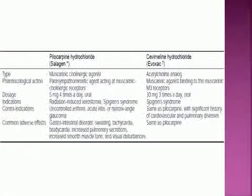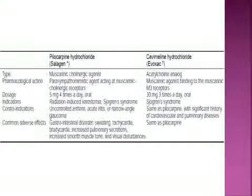Pilocarpine is a muscarinic cholinergic agonist given 5 mg four times a day orally. It is indicated in radiation-induced xerostomia and Sjögren's syndrome, and is contraindicated in cases of uncontrolled asthma, acute iritis, or narrow-angle glaucoma.